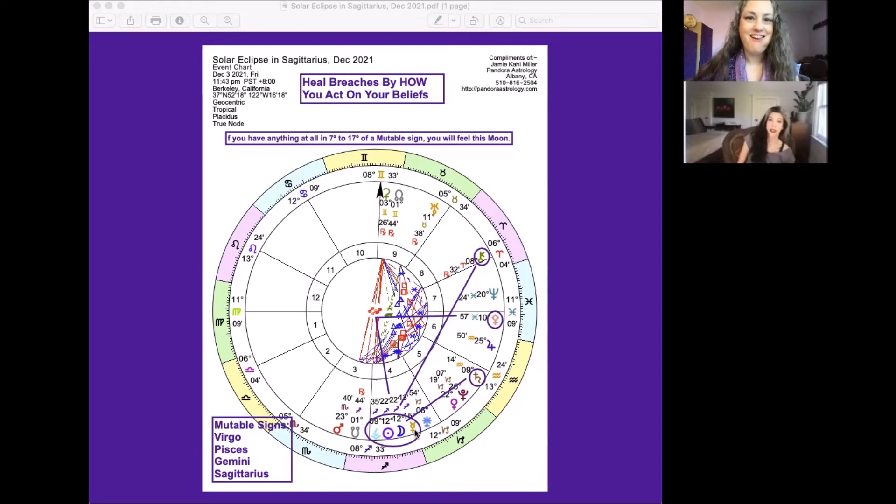Yeah, that's a very good point. And Chiron is sextile Saturn as well. So there's like this nice minor trine of focus, stability, being able to be disciplined.